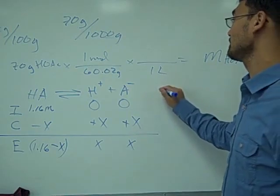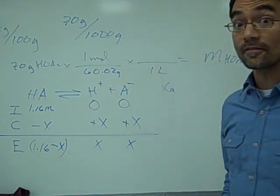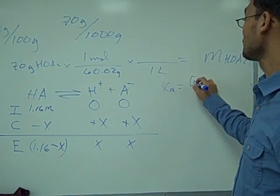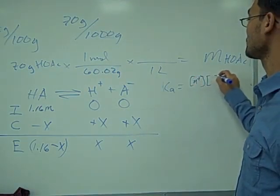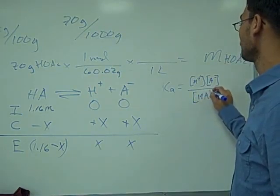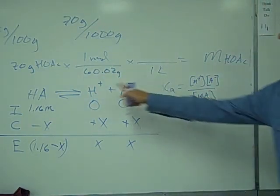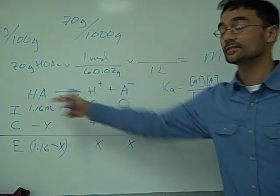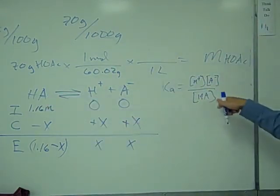What we're going to do is set up the equilibrium expression according to the law of mass action, which would be the concentration of the products divided by the concentration of the reactants. So we can set that expression up, the product of the products over the product of the reactants, so H+ A- over HA.